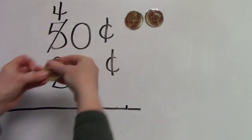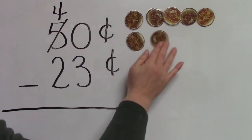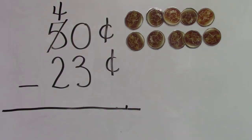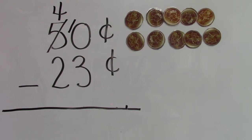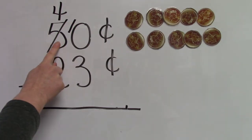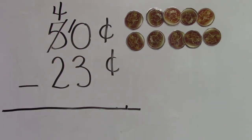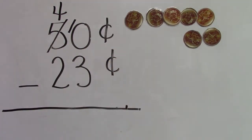One, two, three, four, five, six, seven, eight, nine, ten. Instead of having zero pennies we now have ten pennies. We have ten pennies because we traded one of our dimes for ten pennies. Ten take away three. How many pennies do we have?